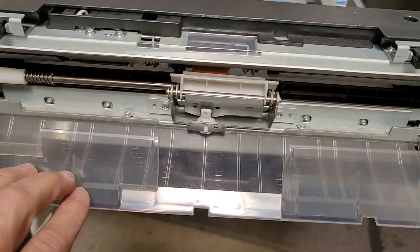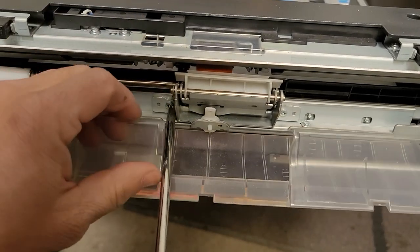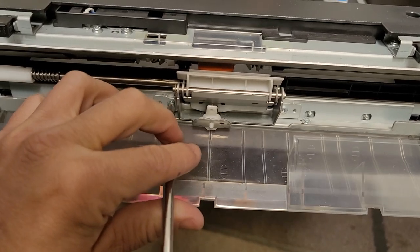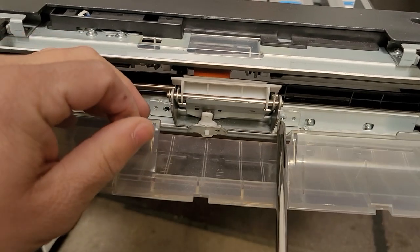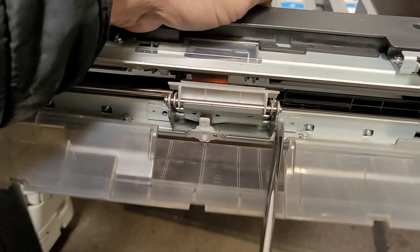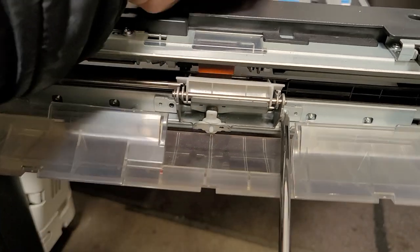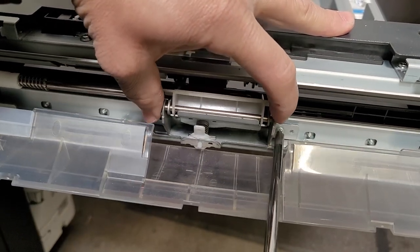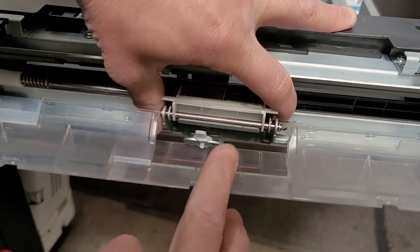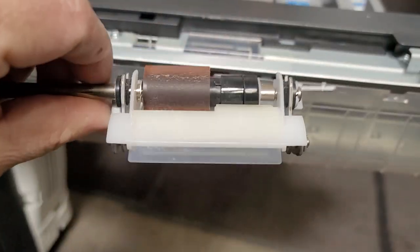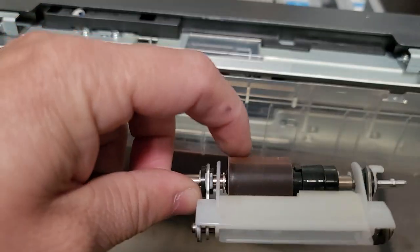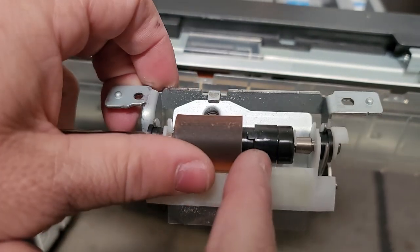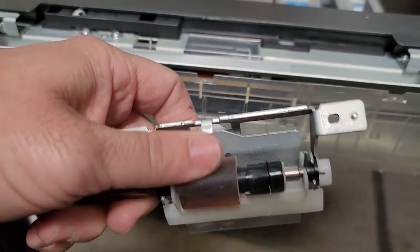First thing we're going to do is just remove these two screws here, right on the left and right. This will remove the separation roller. All right, separation roller comes off just like so, very easy. You can see you got your roller which doesn't look too bad but might have some flat spots in it, so this is probably going to get replaced. And then you have your one-way or clutch right next to it. Same thing, we'll either clean it by just dry wiping it or replace it.